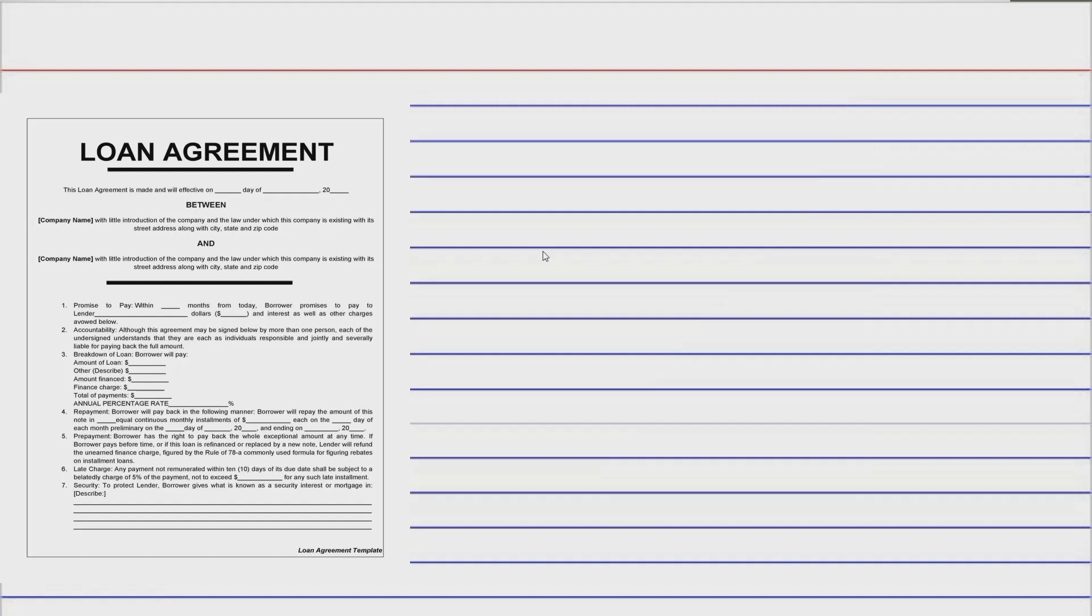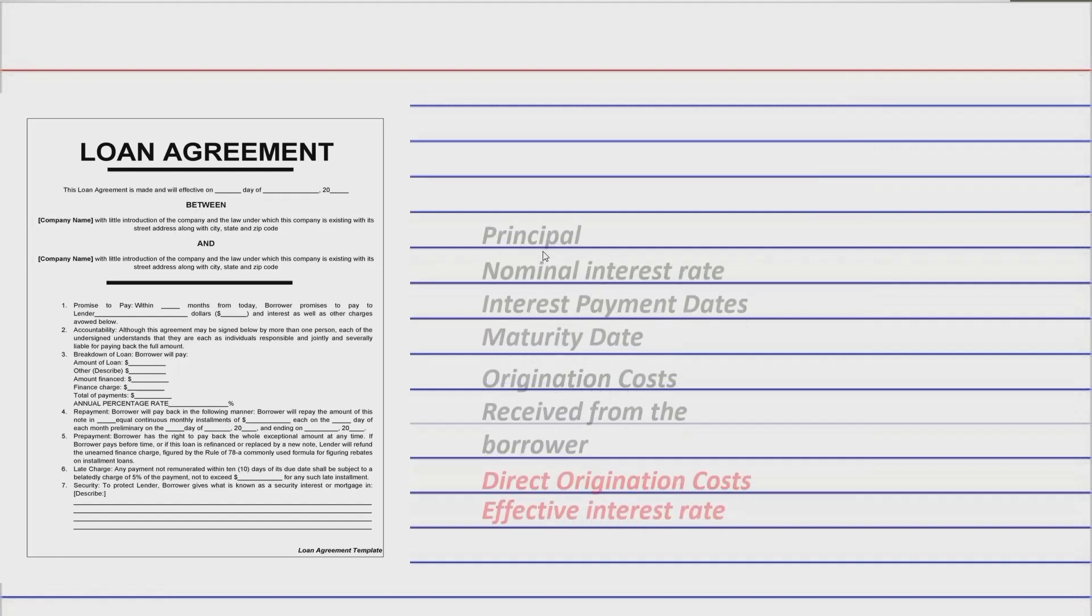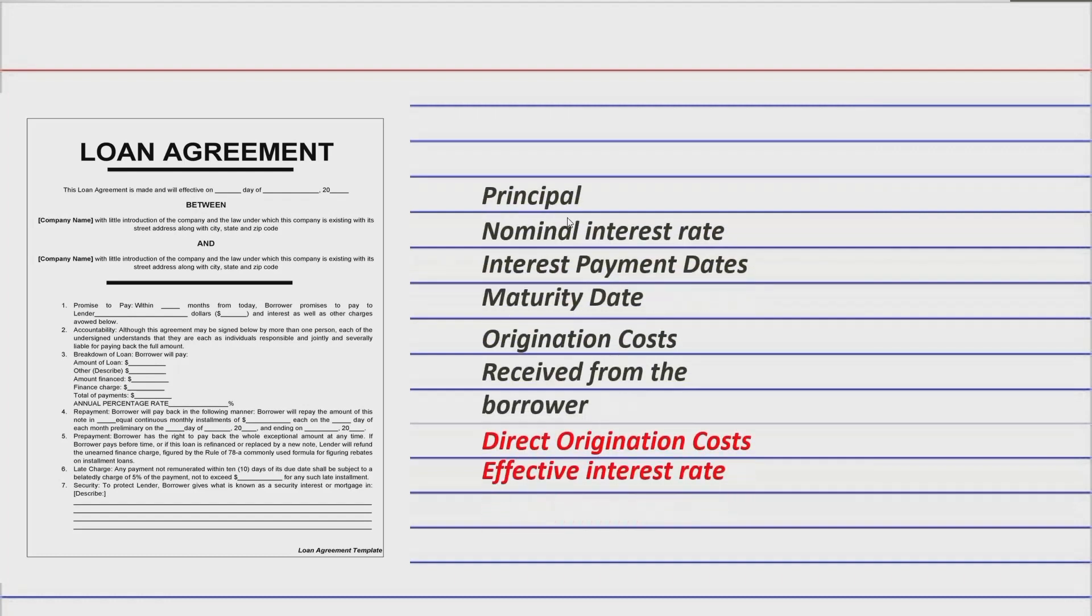In the past episode, I told you that there are details that are needed so that you'll be able to account and record the loans receivable transaction and other related transactions from the beginning to the end of the maturity term. And these details are: first the principal, next is the nominal interest rate and the interest dates of course, and then we have the maturity term and the origination costs received from the borrower, which are normally considered advanced deductions from the proceeds that the debtor will receive.